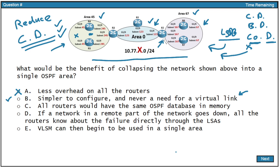Option C: all routers would have the same OSPF database in memory. Would this be a benefit of collapsing the network? No, it wouldn't. It's a true statement that they'd all have the same link state database in a single-area environment, but that relates to option A and is going to place more overhead on them — not a benefit. Option D: if a network in a remote part of the network goes down, all the routers know about the failure directly through the LSAs. True statement, but not a benefit — that's the huge convergence domain I referred to.